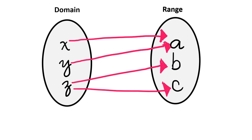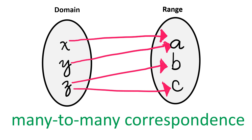Lastly, this mapping diagram shows that though x and y are both being paired once with an element in the range, the element z is being paired twice with elements B and C in the range. Therefore, it's not a function, and specifically it's called many-to-many correspondence. So the relationships which are functions are one-to-one and many-to-one.